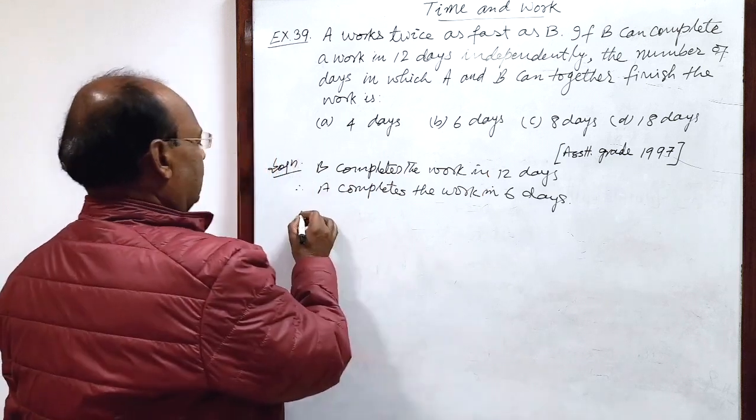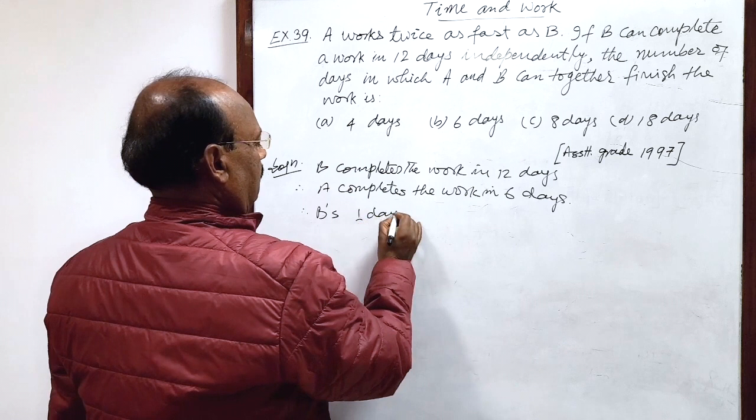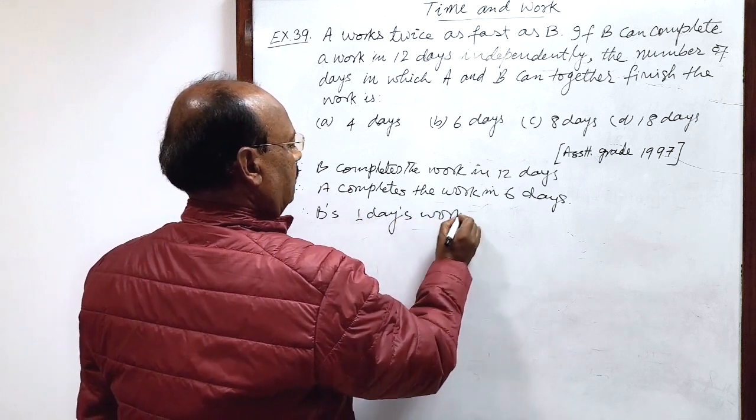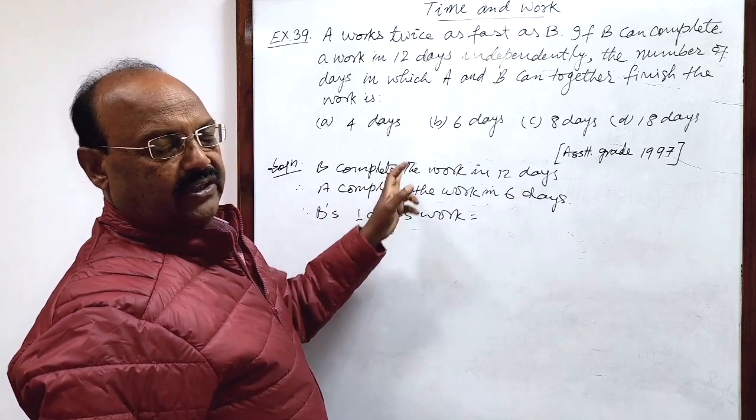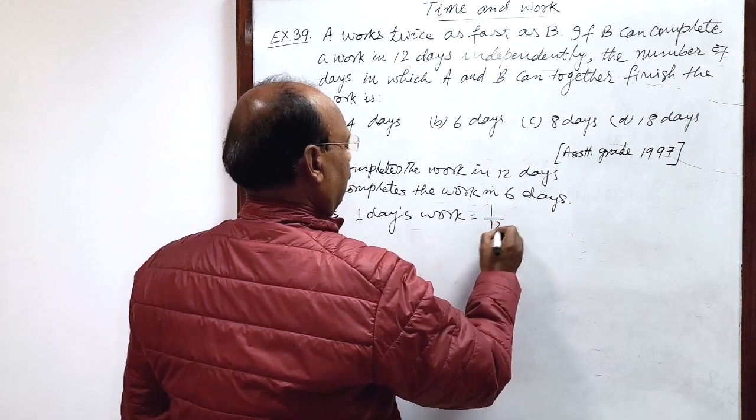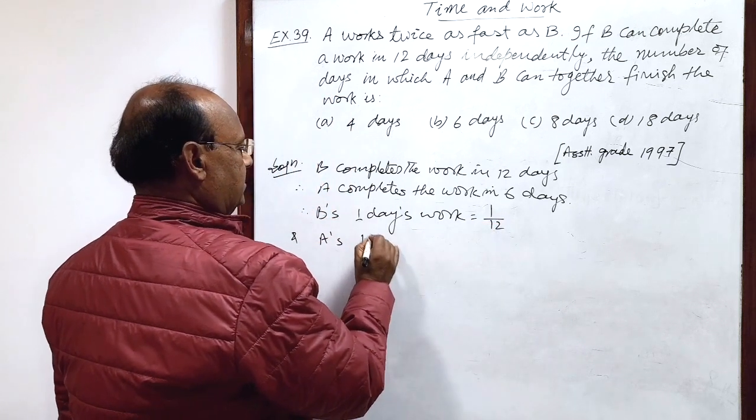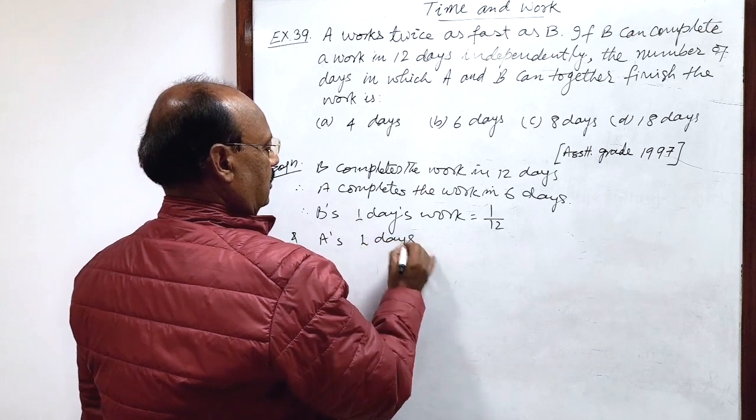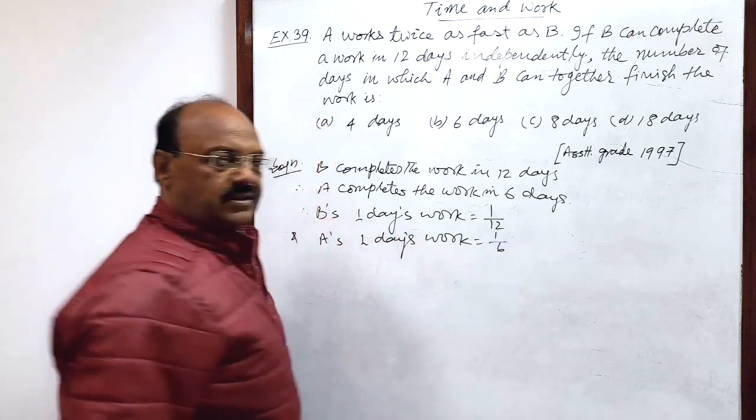Therefore, B's 1 day's work: in 12 days 1 work, so by unitary method in 1 day, 1 by 12 work. And similarly, A's 1 day's work will be 1 by 6.